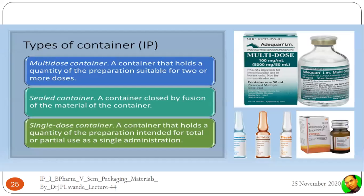Regarding the multiple dose container, it is a container that holds a quantity of preparation suitable for two or more doses, such as injectable vials, where multiple injections can be given by taking content out of the vial. The needle is inserted by puncturing the closure, the content is withdrawn, and then injected to the patient.